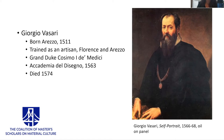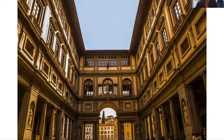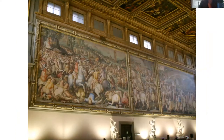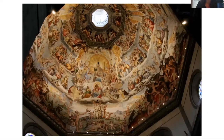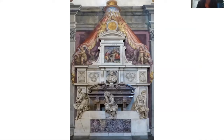Vasari ran an impressive and efficient workshop of artisans, which produced some of the most conspicuous works of art in Florence. I include in this presentation a number of works that I believe you should be most concerned with: the façade of the Uffizi Galleries, the fresco cycle in the Salone del Cinquecento in the Palazzo Vecchio, the fresco cycle of the Last Judgment in the Cathedral's Dome, and Michelangelo's burial monument in the Church of Santa Croce. These are just the prominent Florentine examples; Vasari's artworks can be seen in Venice, Rome, and many other places in Italy.